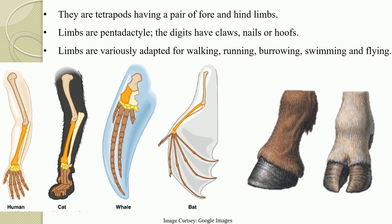All mammalian organisms are tetrapods. They have a pair of fore and hind limbs — four legs total. Two are in the pectoral girdle and two lie in the pelvic girdle, known respectively as fore and hind limbs. Hence they are known as tetrapods.